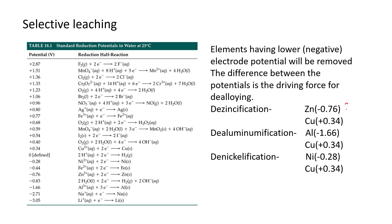From this table, for brass alloy, zinc has a minus 0.76 volt electrode potential and copper has plus 0.34 volt. So zinc will be removed from the brass alloy. In case of aluminum bronze, aluminum having an electrode potential of minus 1.66 volt will be leached, and in case of monel alloy, nickel having minus 0.28 volt will be removed.